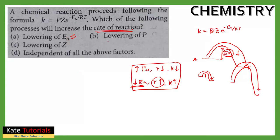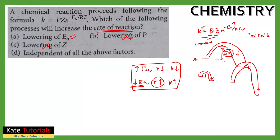Lower Ea will increase the rate of reaction. P and z are constants, so changing them doesn't matter. If temperature increases, since T is in the denominator with a negative sign in the exponent (-Ea/RT), increasing T increases the rate constant k and hence the rate of reaction. Similarly, if Ea increases, since it appears as minus Ea, the rate constant decreases.